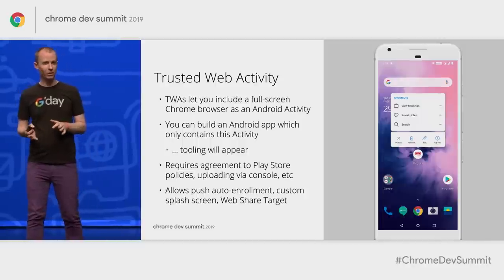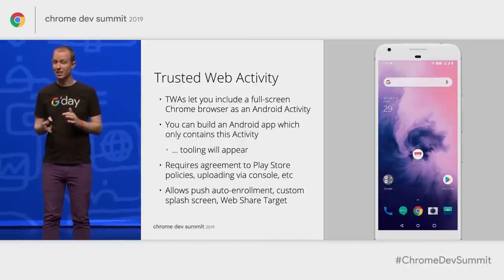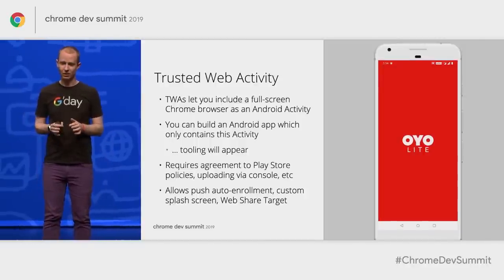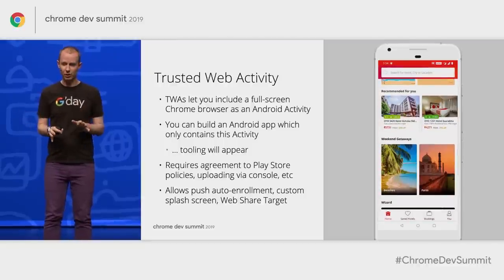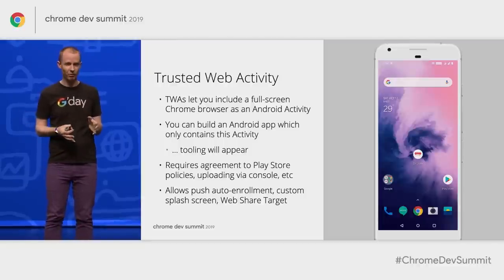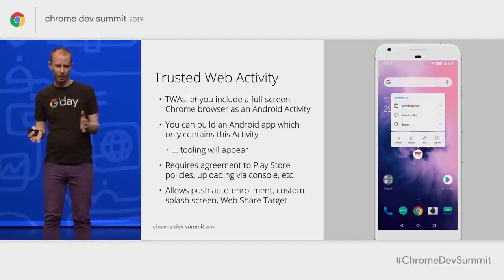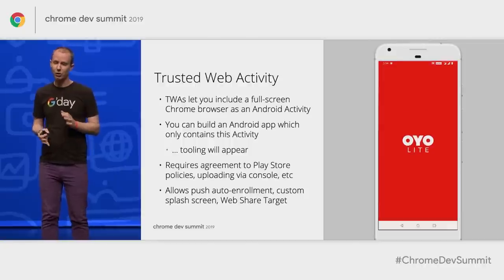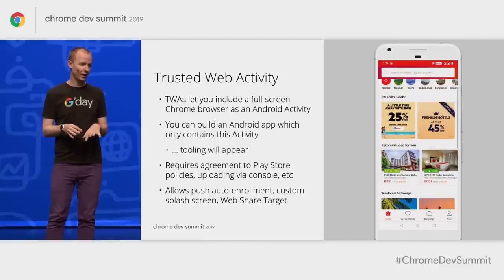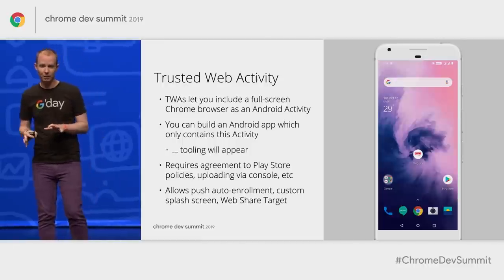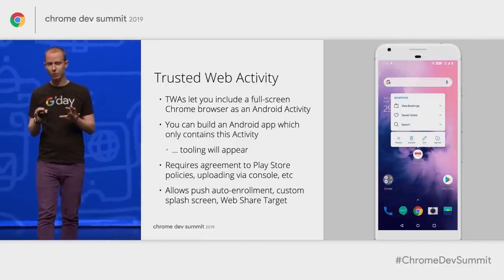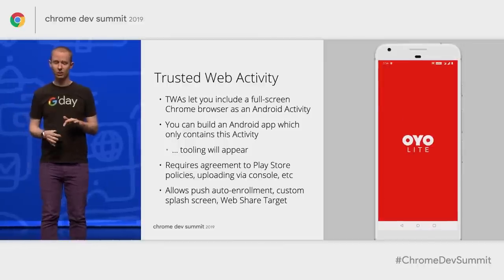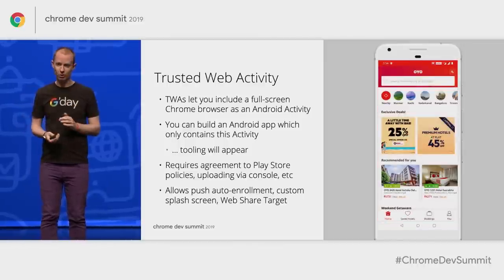Another option for install on Android is Trusted Web Activities, or TWA. Fundamentally, you're writing an Android application which features a core activity provided by Chrome — and fairly soon, Firefox as well. You're uploading it to the Play Store, so it's discoverable and promotable like any other native app. The best way to learn more is to follow Google's Codelabs — search for 'TWA Codelabs.'